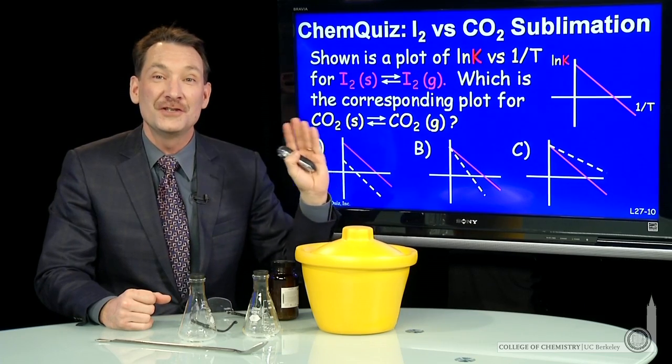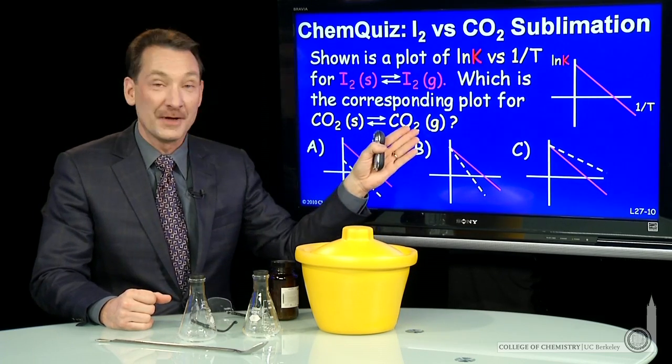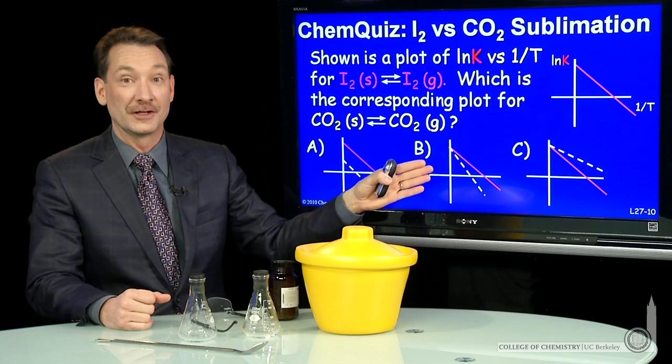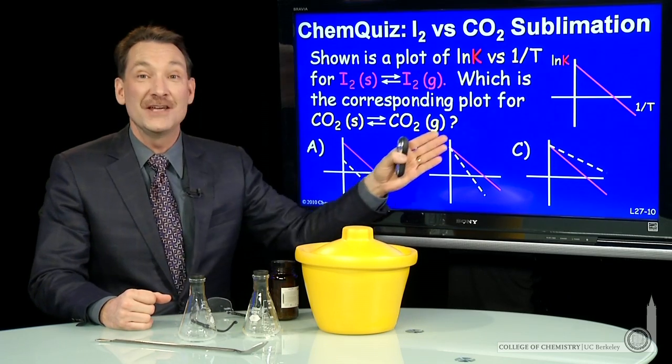From that, can we deduce what the sublimation of carbon dioxide plot would look like? Would it look like A, B, or C?